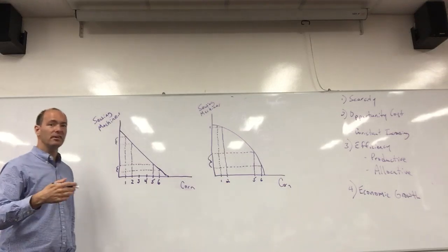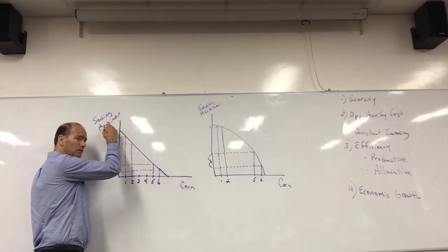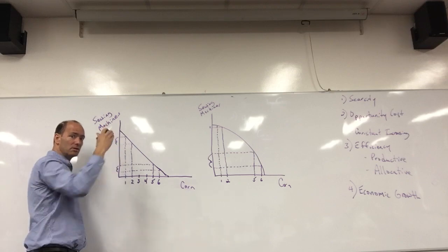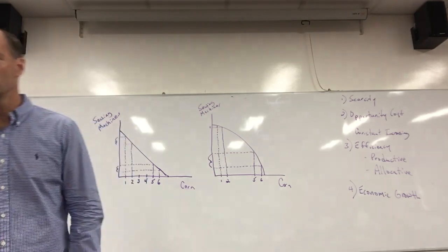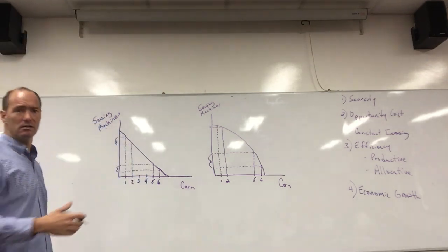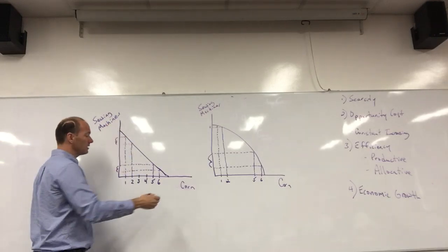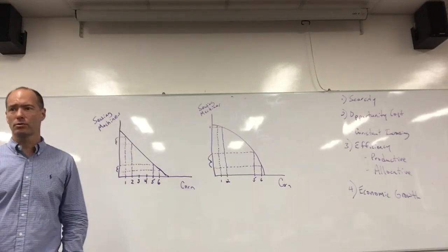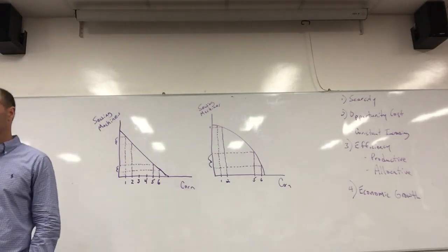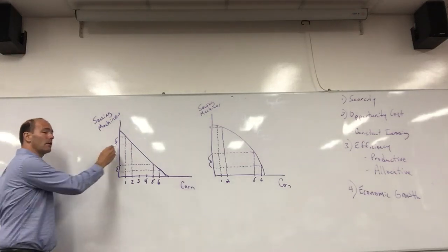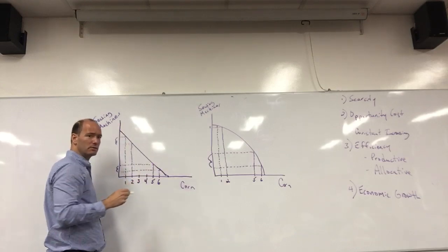We often choose a capital good — a sewing machine — which is a good that can be used to make other goods. A sewing machine can be used to make textiles. And a consumer good: corn. Once you've eaten corn, it's gone — it can't help you make anything else. So we have an economy in which two goods are in use.